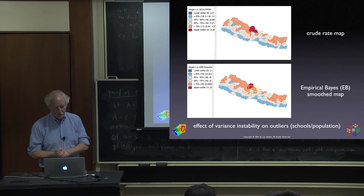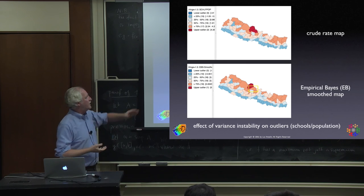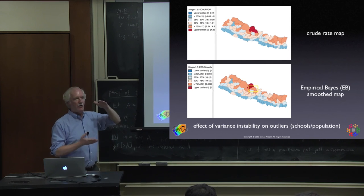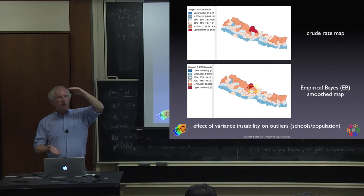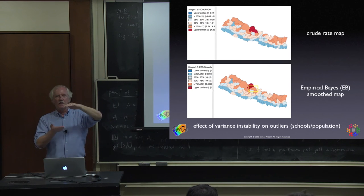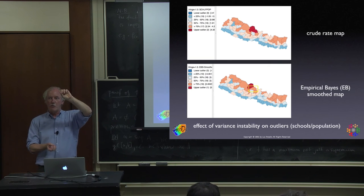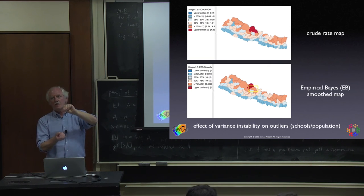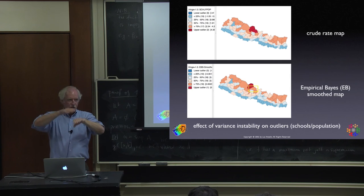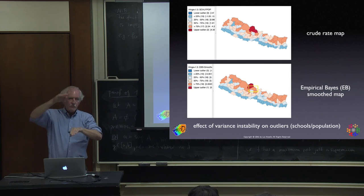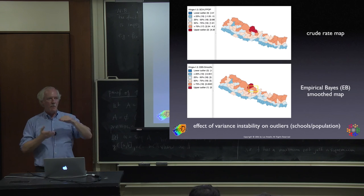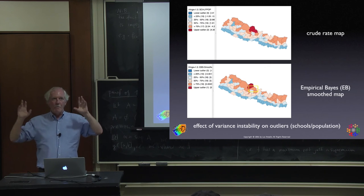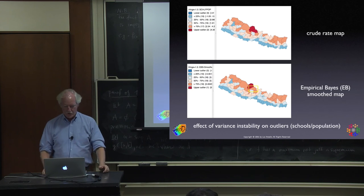This is the methodology of smoothing rates: shrinking them towards a reference value. In Nepal data I've used, you see a small effect at the outliers — extreme values pertaining to small areas get pulled within the fence of the box plot. Typically the effect is only at the margins.